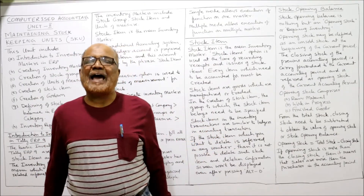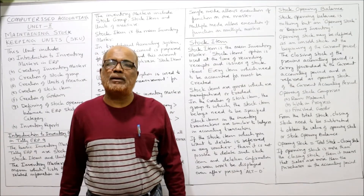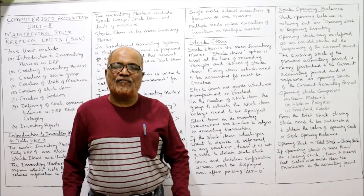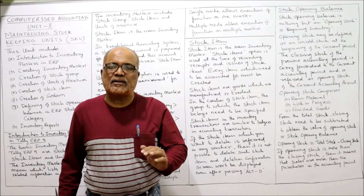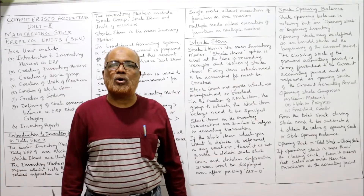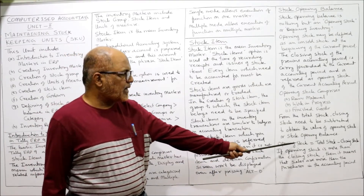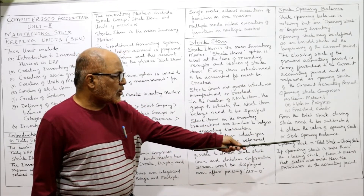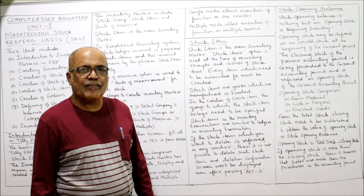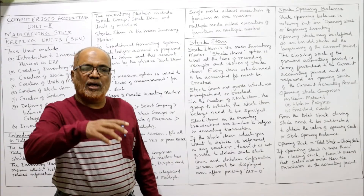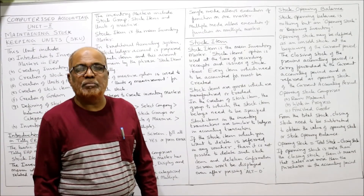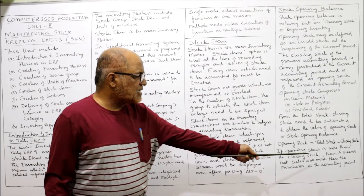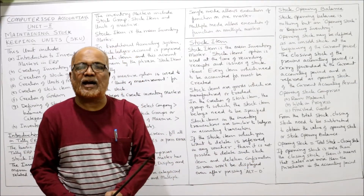From the total stock, closing stock needs to be subtracted to obtain the value of stock opening balance. If you want to calculate the value of stock opening balance, take total stock minus closing stock — we will get the stock opening balance. The formula is: opening stock = total stock minus closing stock. If opening stock is more than the closing stock, it means the sales are more than the purchases in that accounting period.